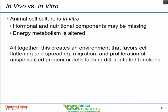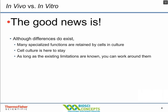Based on the disruption of the extracellular matrix and the selective pressure favoring cells with growth advantages, we generally favor cells that have flattening, spreading, and migration. These are usually unspecialized progenitor cells that lack differentiated functions. The good news, however, is that even though these in vitro differences do exist, cells still retain their specialized functions, and cell culture is here to stay as a model system for various diseases, research, and development.